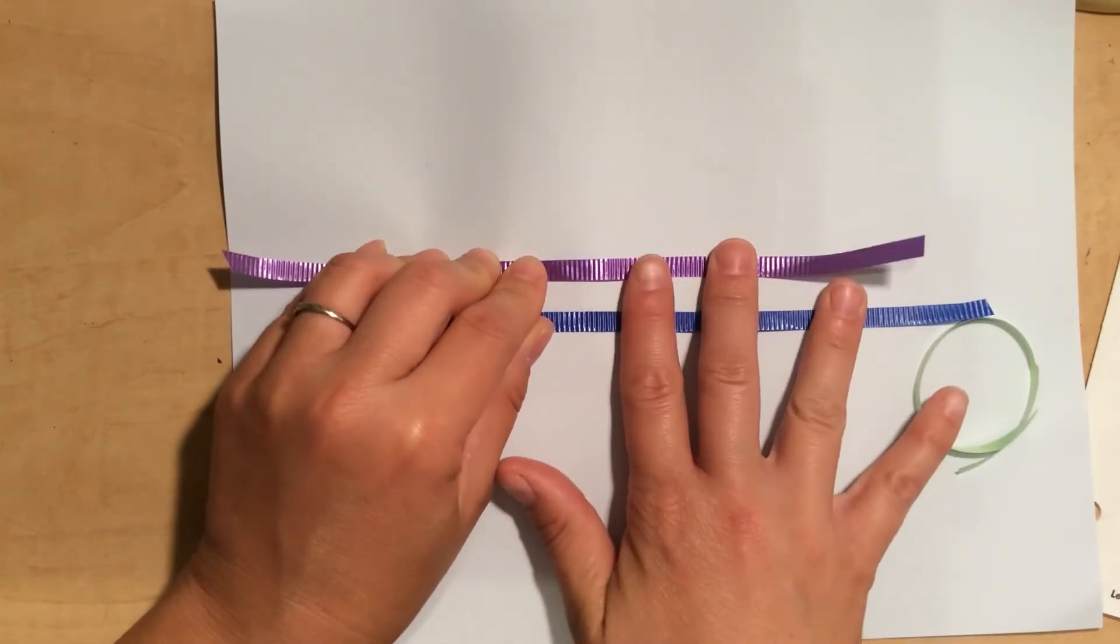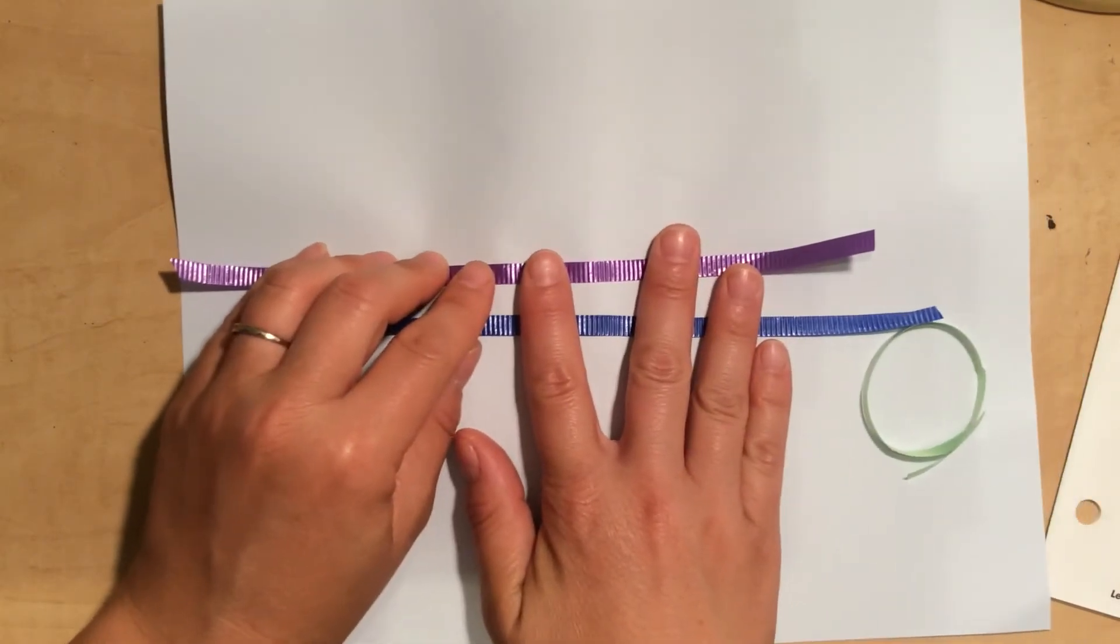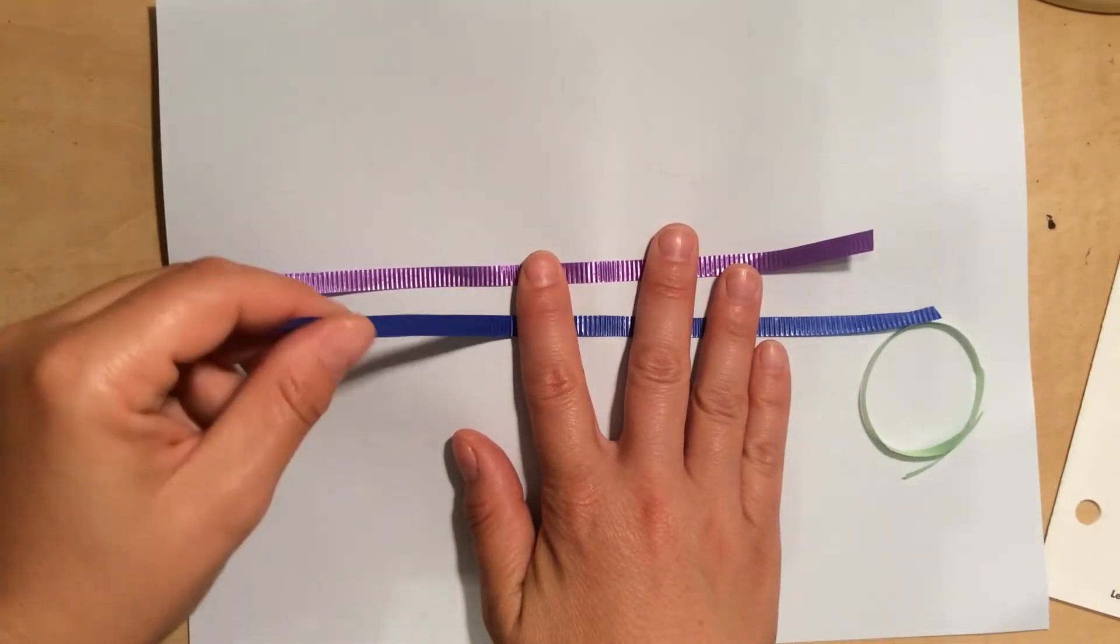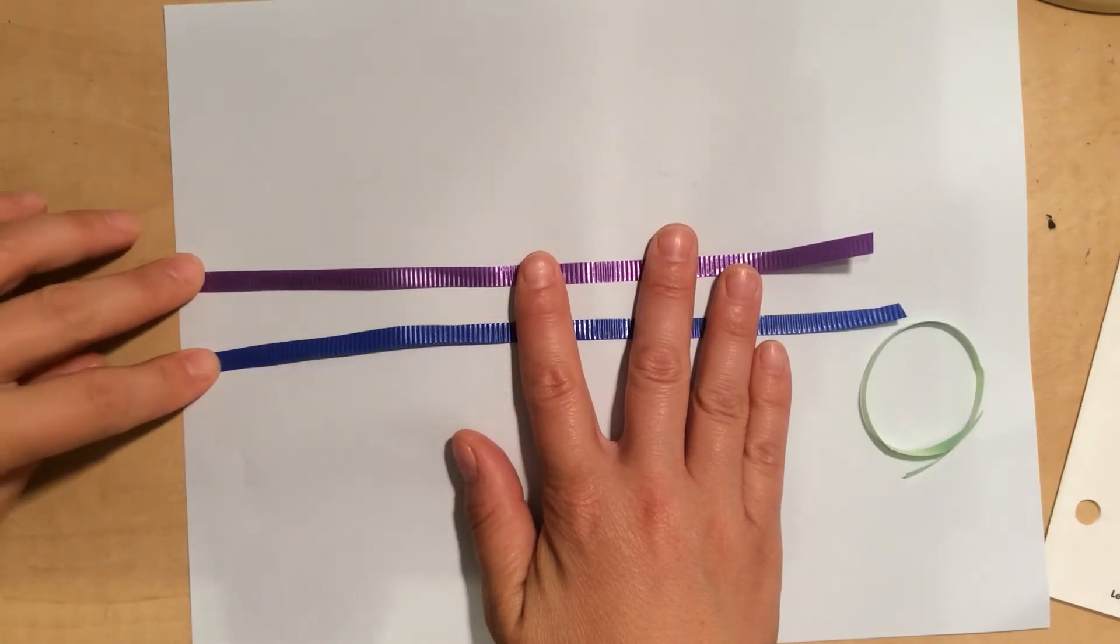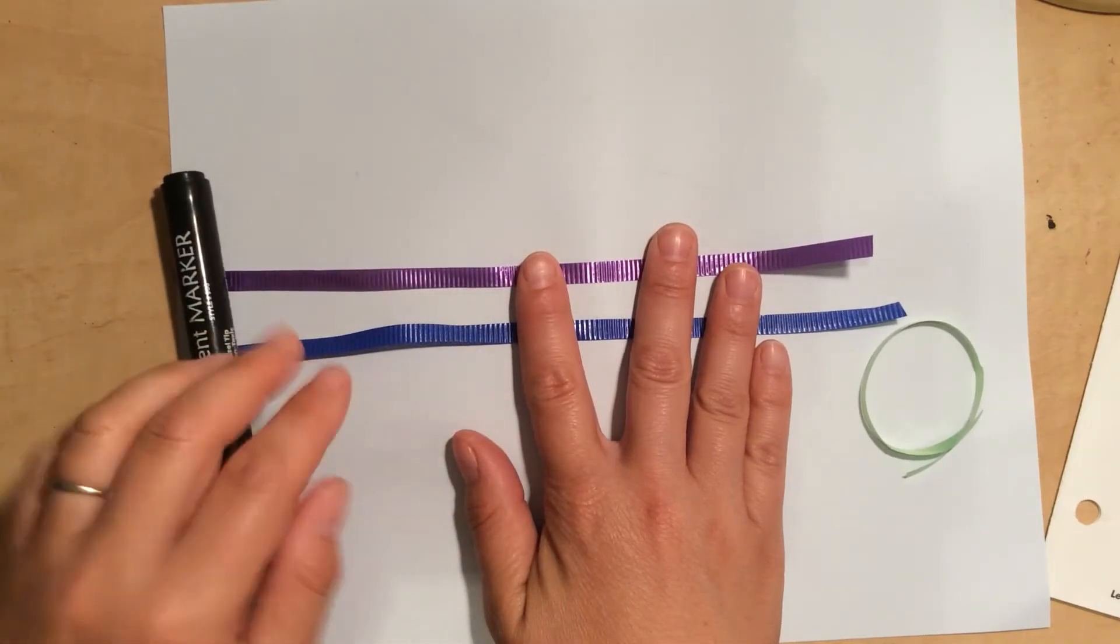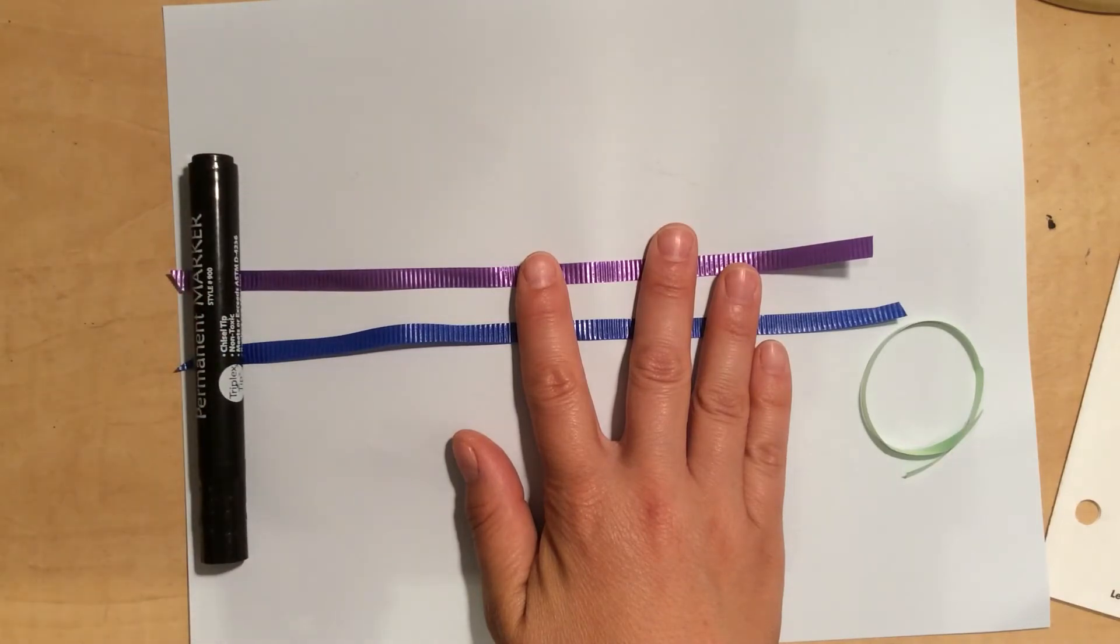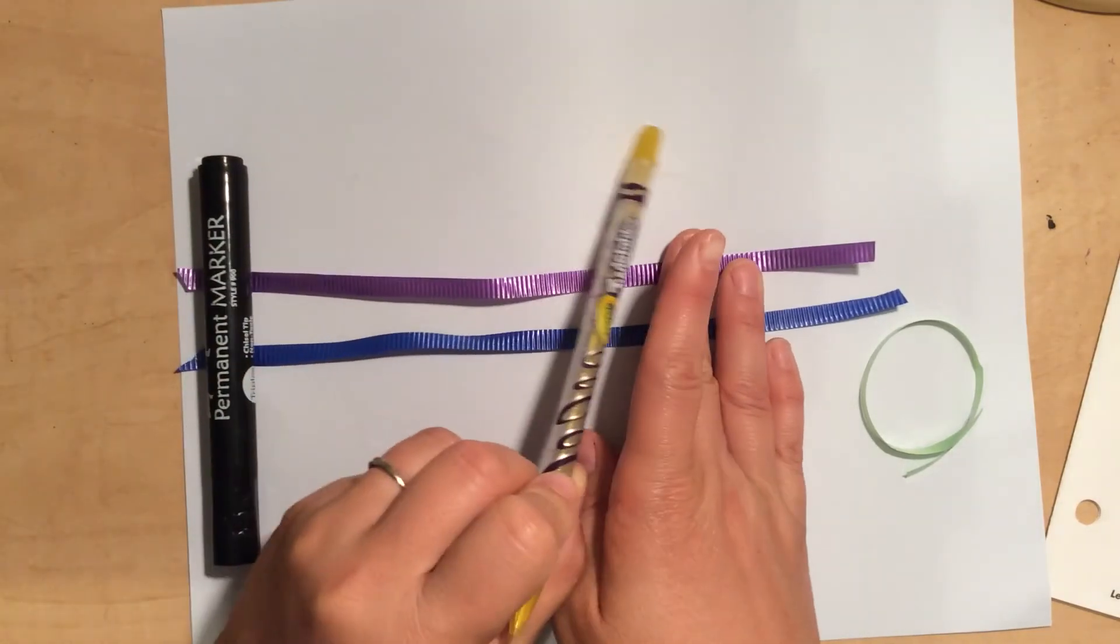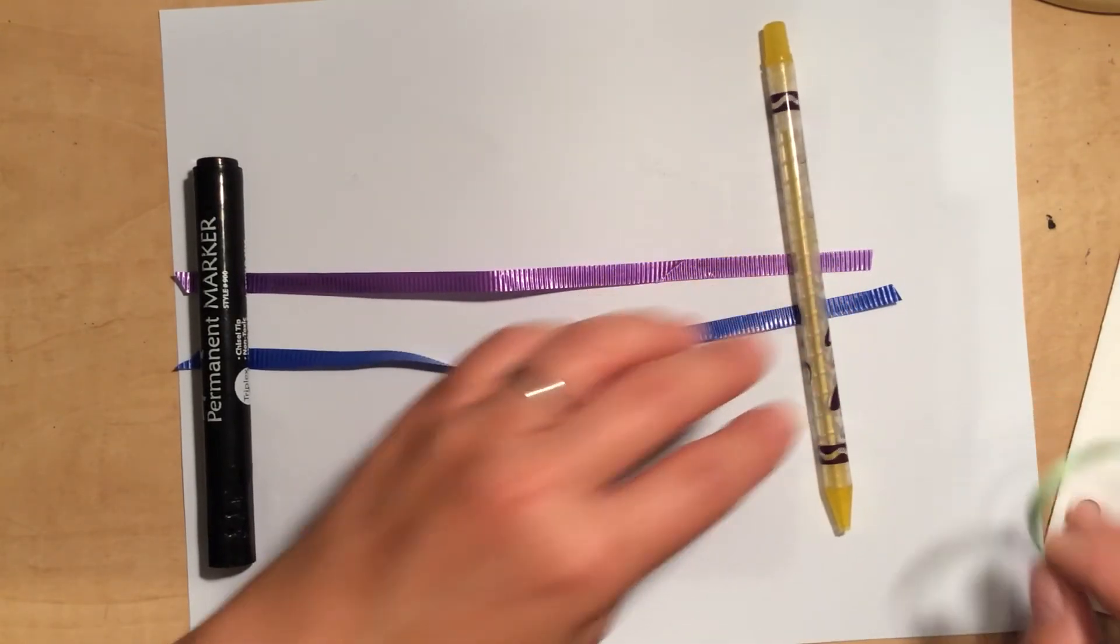That is longer than the purple one. I don't know if you can see that there. Oh, maybe not. Oh, they're really close. All right, let's set something down here so that we can see where they're aligning. And then we're going to take the green. Oh yeah, the blue is definitely longer.